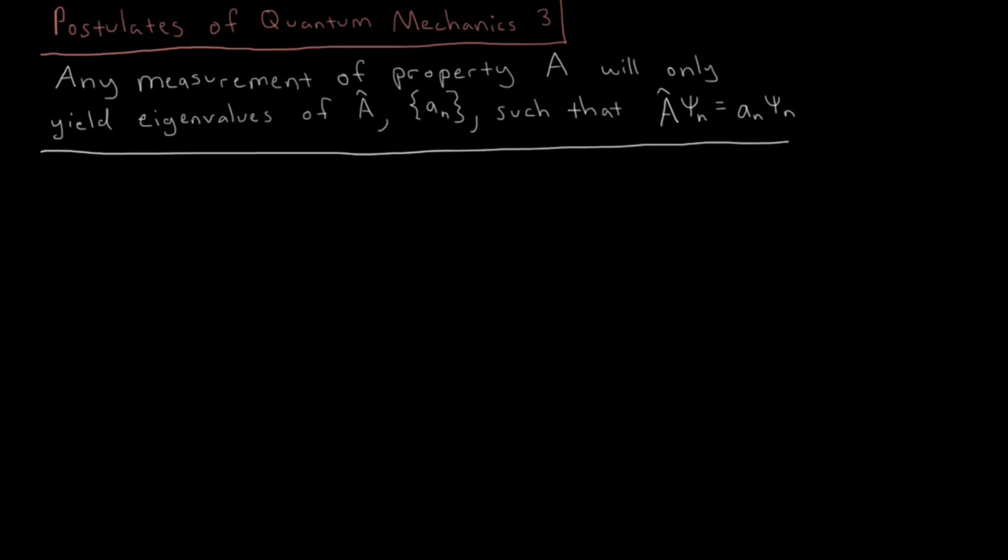Continuing on to postulate 3, we have for the third postulate of quantum mechanics that any measurement of a property A, so A is some physical property that we can measure like position, momentum, energy.